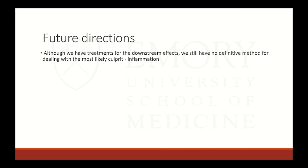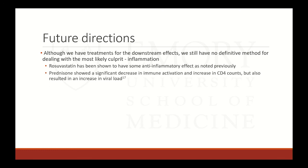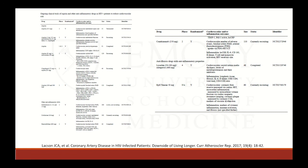What about future directions? We still don't have a definitive method for dealing with chronic inflammation, the most likely culprit. Rosuvastatin has shown some anti-inflammatory effects. Prednisone showed decreased immune activation and increased CD4 counts, but at the cost of increased viral loads — a wash. There are several trials investigating various anti-inflammatory mediators currently ongoing, including antiplatelets like aspirin and clopidogrel, classic anti-inflammatories like methotrexate, colchicine, and pentoxifylline, as well as newer biologic agents like canakinumab.